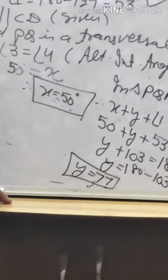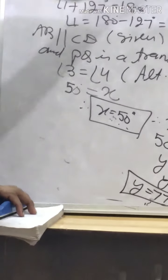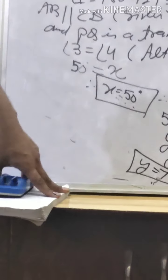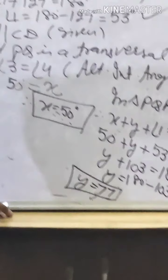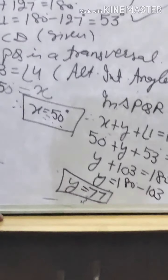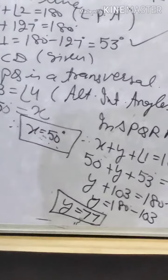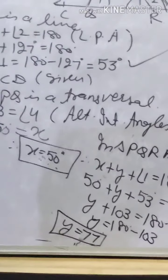So my dear students, there are many methods to solve one question. I applied linear pair, then alternate angles, then angle sum property of a triangle to find y — that is also correct, marks will not be deducted. You have to revise Exercise 6.1 and 6.2 completely, including the examples. If there is any problem, you can ask. Thank you, have a good day.